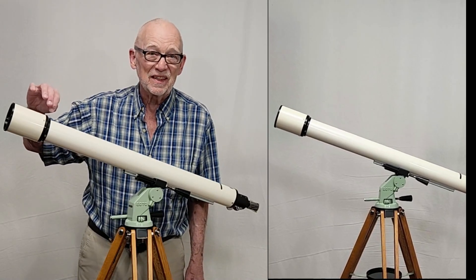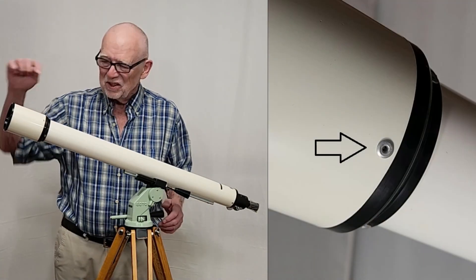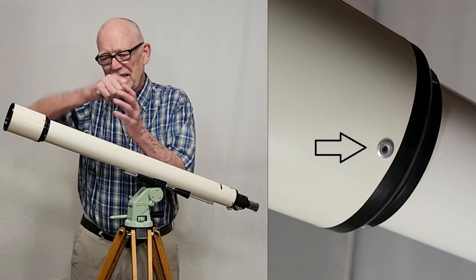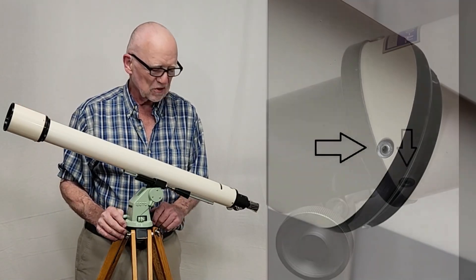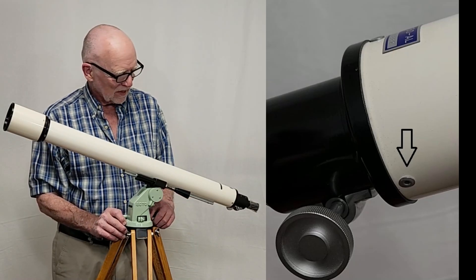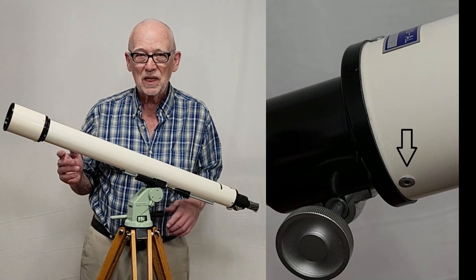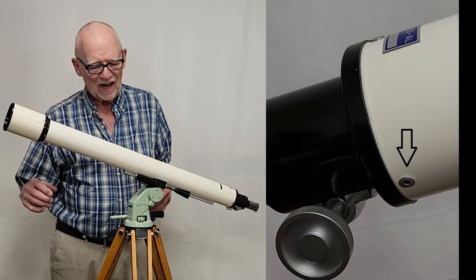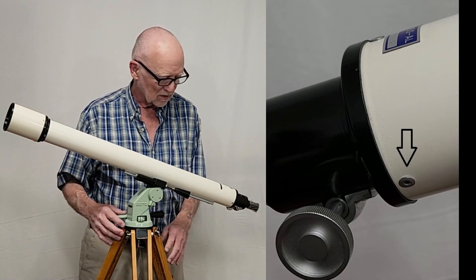For example, this thing is riveted. These are not screws here. Those are rivets to keep the kids from getting in there with their little screwdrivers and taking the thing apart. Which also unfortunately keeps a qualified service person away from it as well.